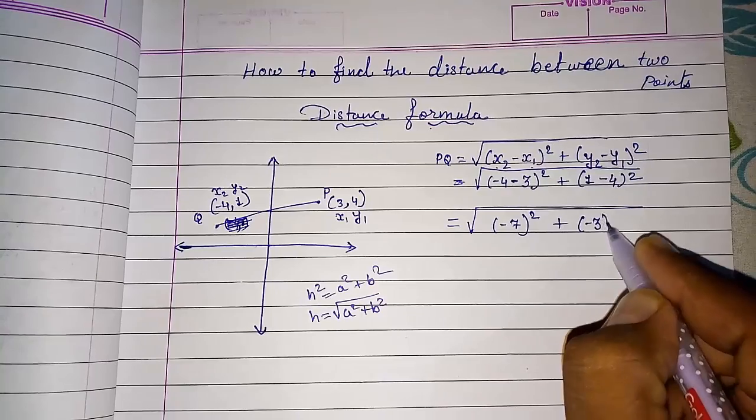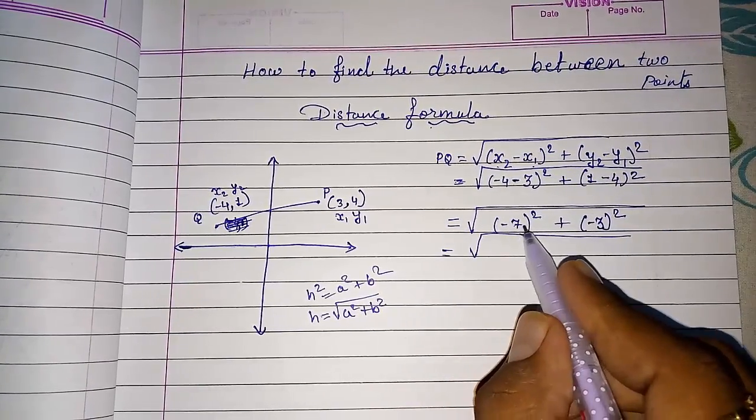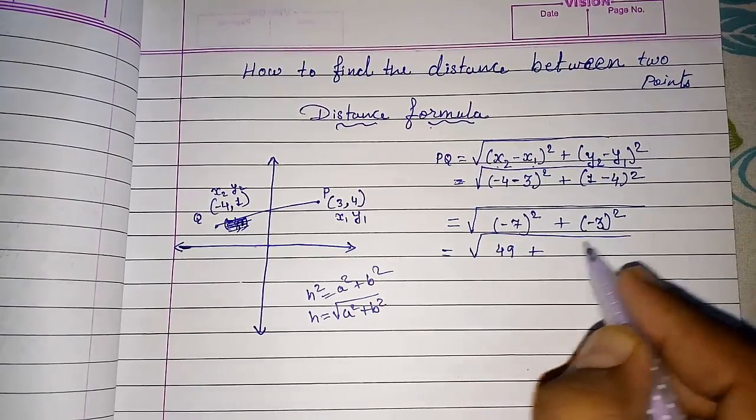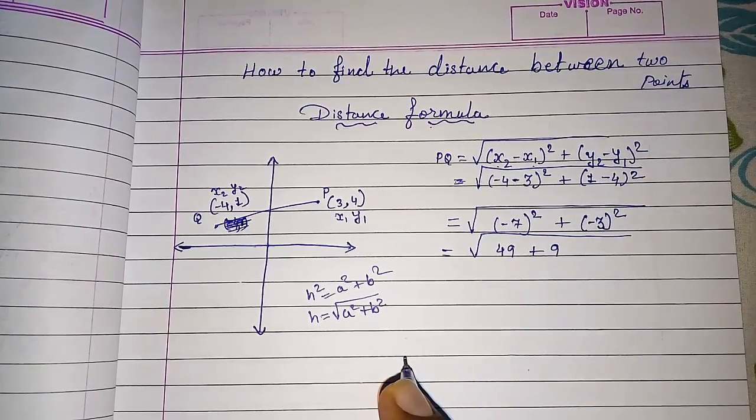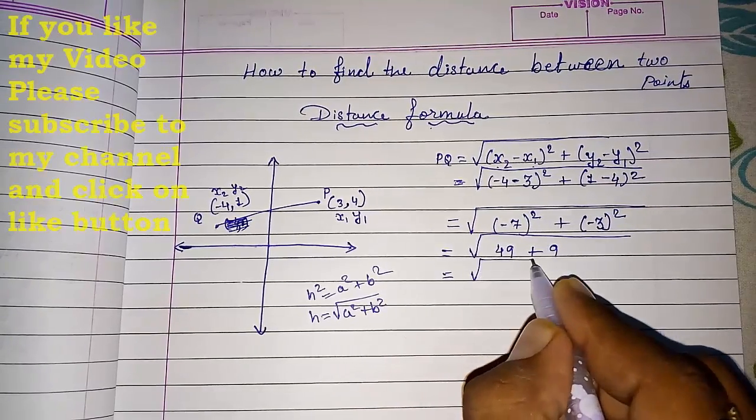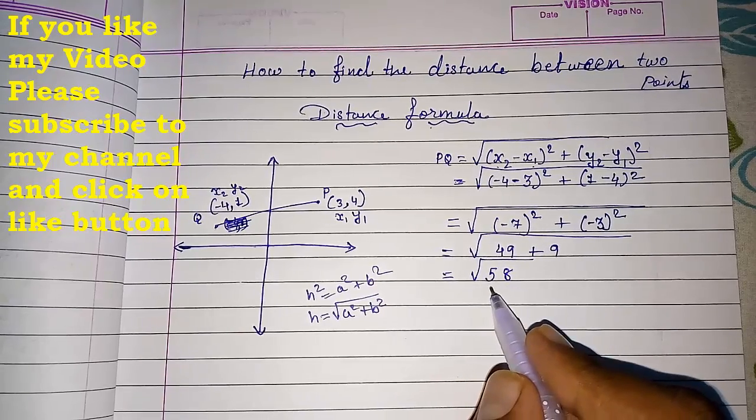Now (-7)² gives you 49—positive will happen—and (-3)² will be 9 only. So now the addition of these two numbers: 49 + 9 = 58. So the answer is √58.